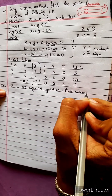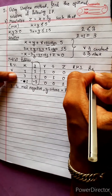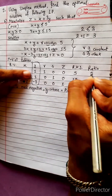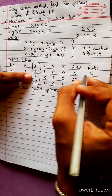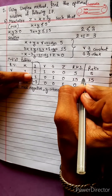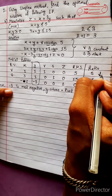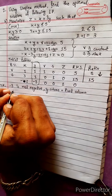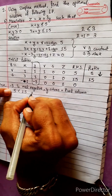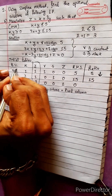For the pivot column, we compute the ratio: 5 divided by 1 equals 5, and 15 divided by 1 equals 15. Since 5 is less than 15, we select 5, so row r is the pivot row.